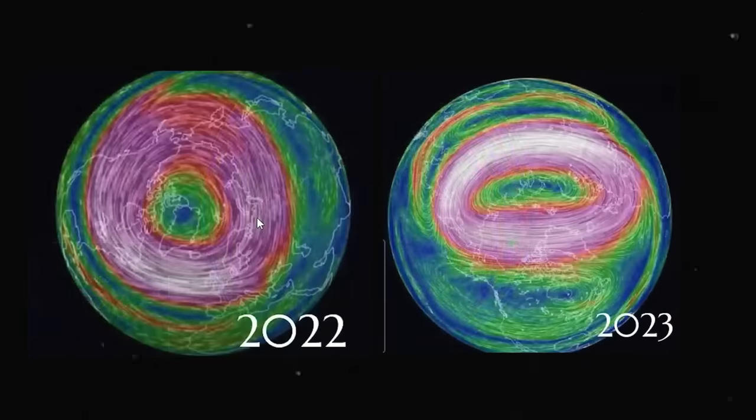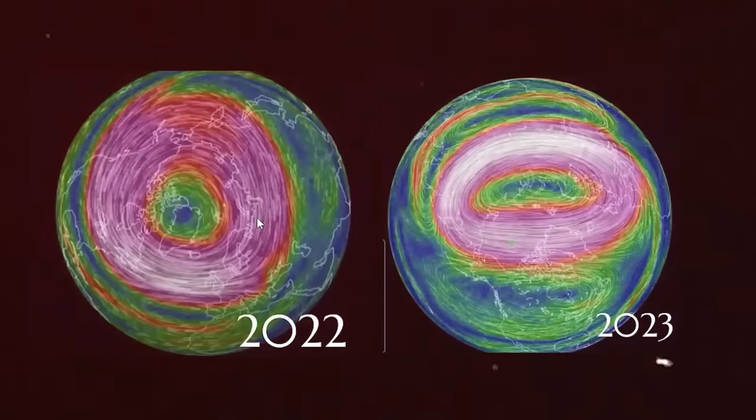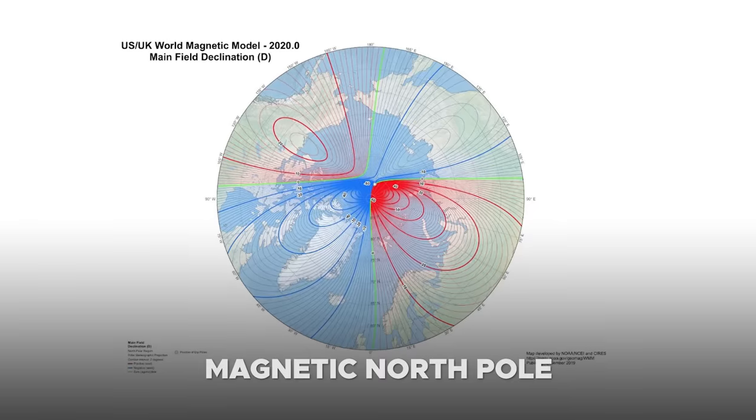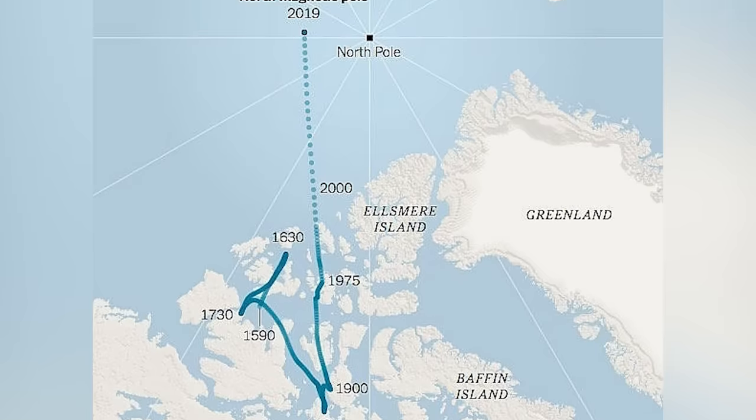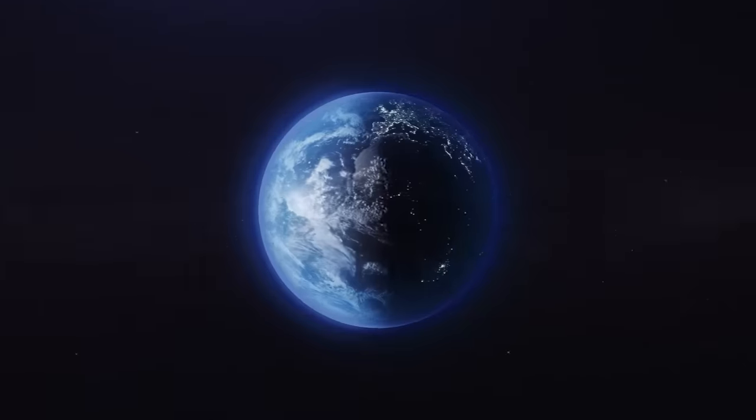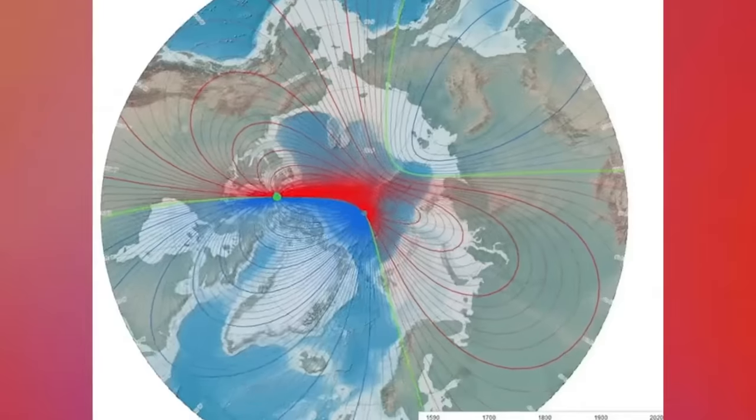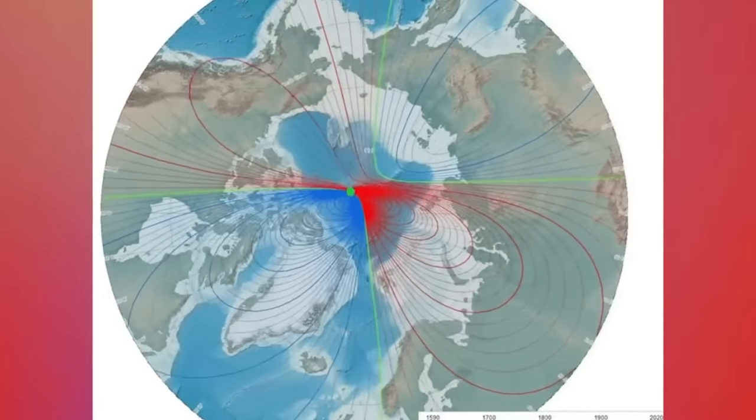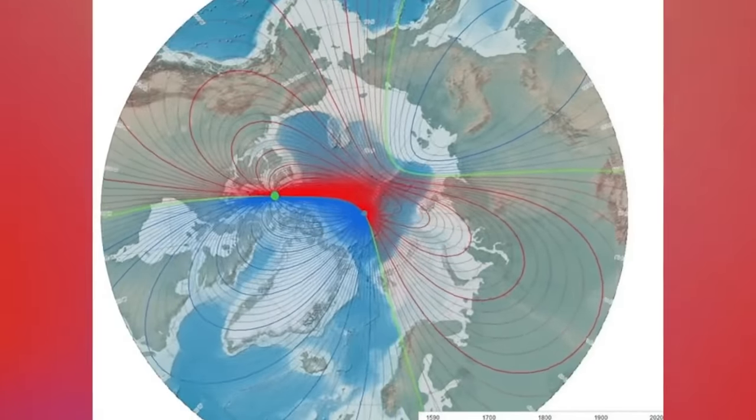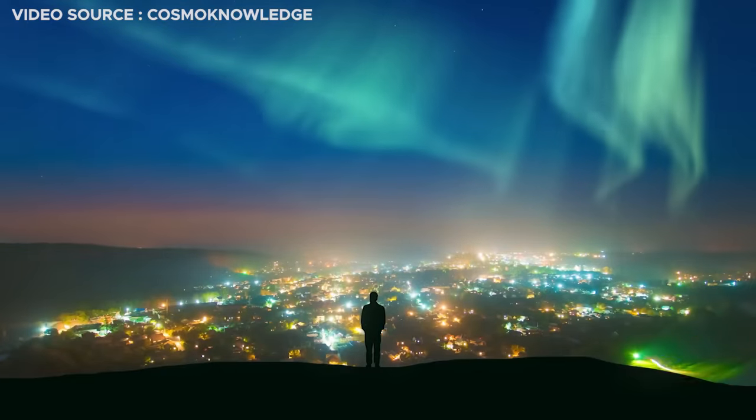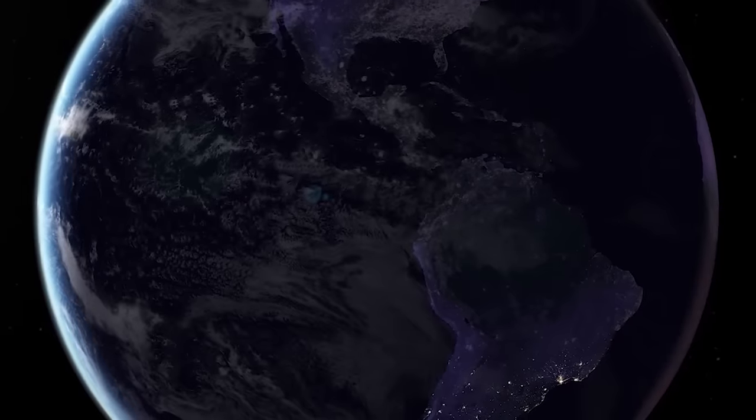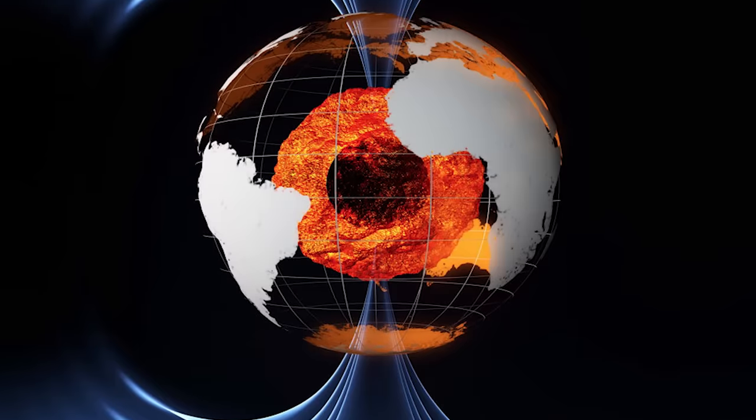Some scientists propose that it serves as an indication of the magnetic poles gearing up for reversal. Adding to the enigma, the motion of the magnetic poles has displayed an unusually swift pace in recent years. The magnetic North Pole, traditionally situated in Canada, has been rapidly shifting towards Siberia. Since the mid-20th century, the rate of this movement has escalated from approximately 15 kilometers per year to around 50 to 60 kilometers per year. This abrupt and unprecedented pole movement perplexes scientists, as it defies the recorded history of Earth's magnetic field.